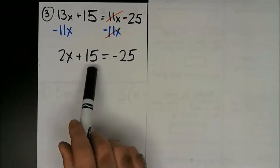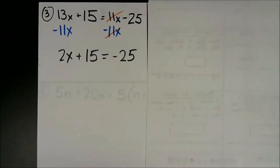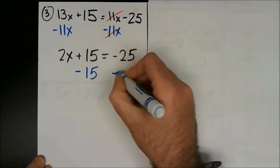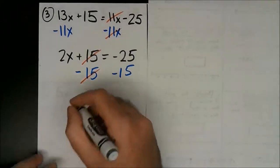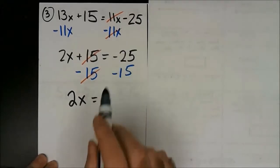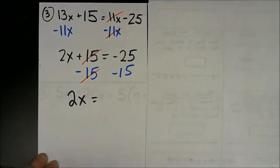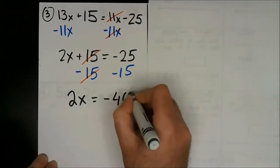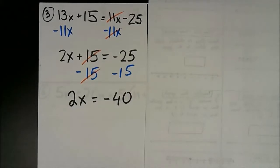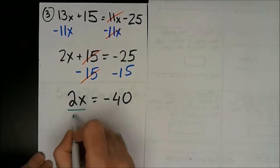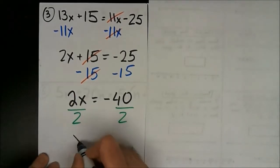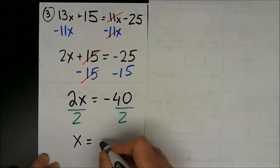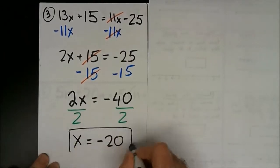My next step is to isolate this x. I'm going to get rid of the plus 15 — the opposite is minus 15 from both sides. These are gone, and on the left side I'm left with just 2x. On the right side, negative 25 minus 15 — they're both negative numbers, so they combine to a bigger negative number: negative 40. To get rid of the multiplied by 2, I divide by 2 on both sides. 2 divided by 2 is 1, so I just have x. Negative 40 divided by 2 — negative divided by positive — is negative 20.